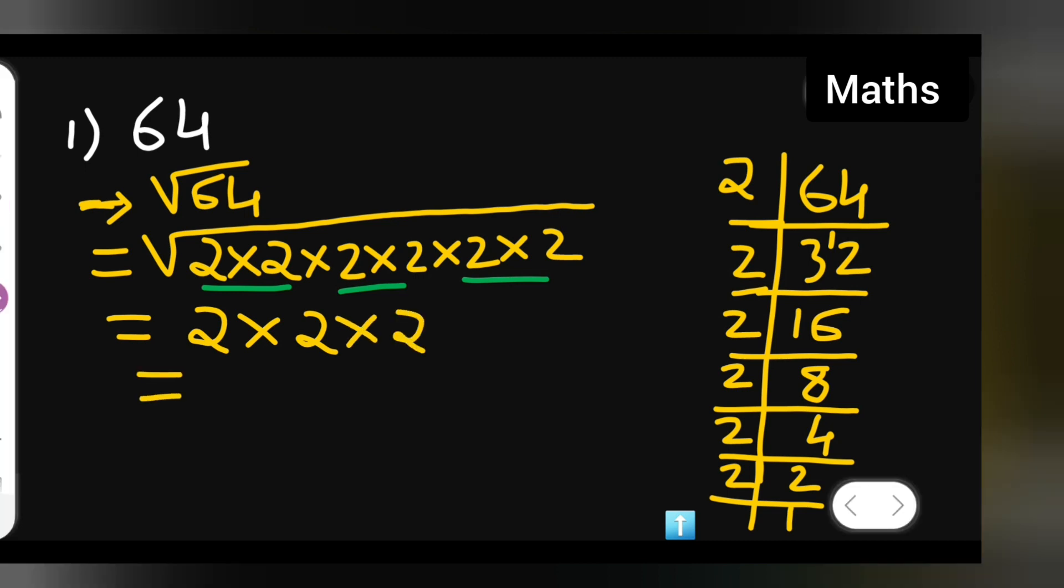Now what you will have to do is multiply this. What are you going to get? 2 twos are 4, 4 twos are 8. So square root of, therefore you all can write down, square root of 64.